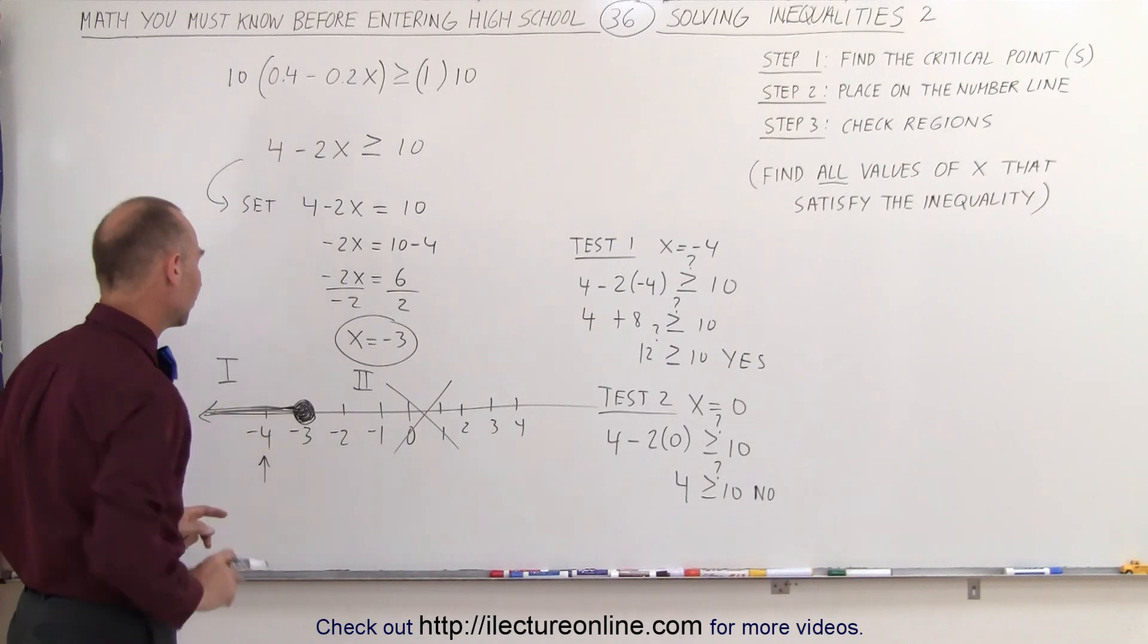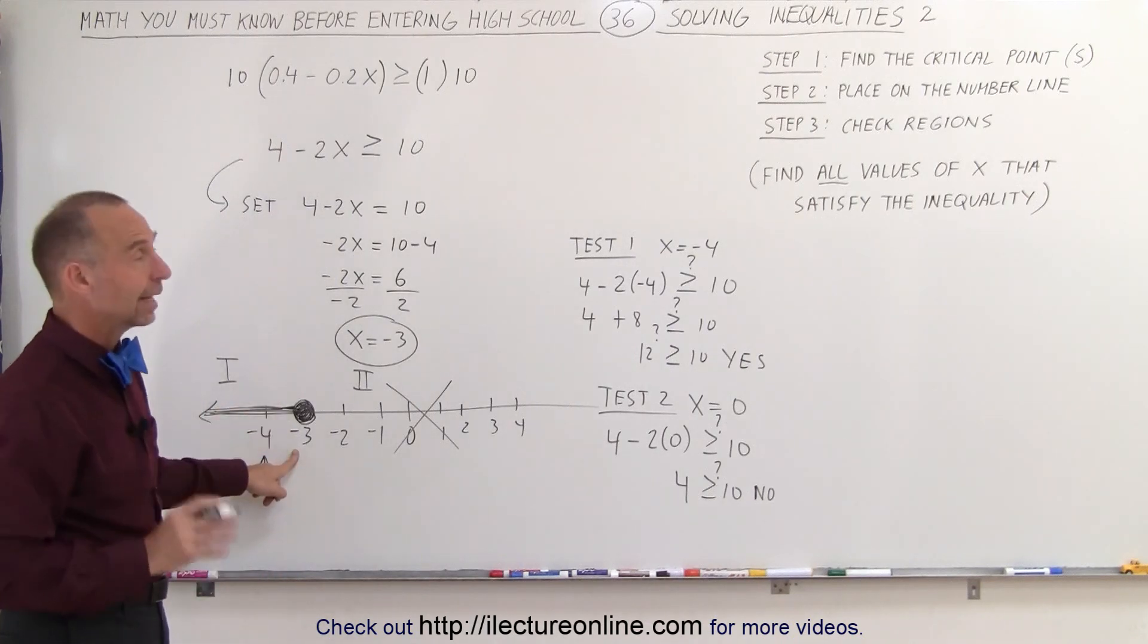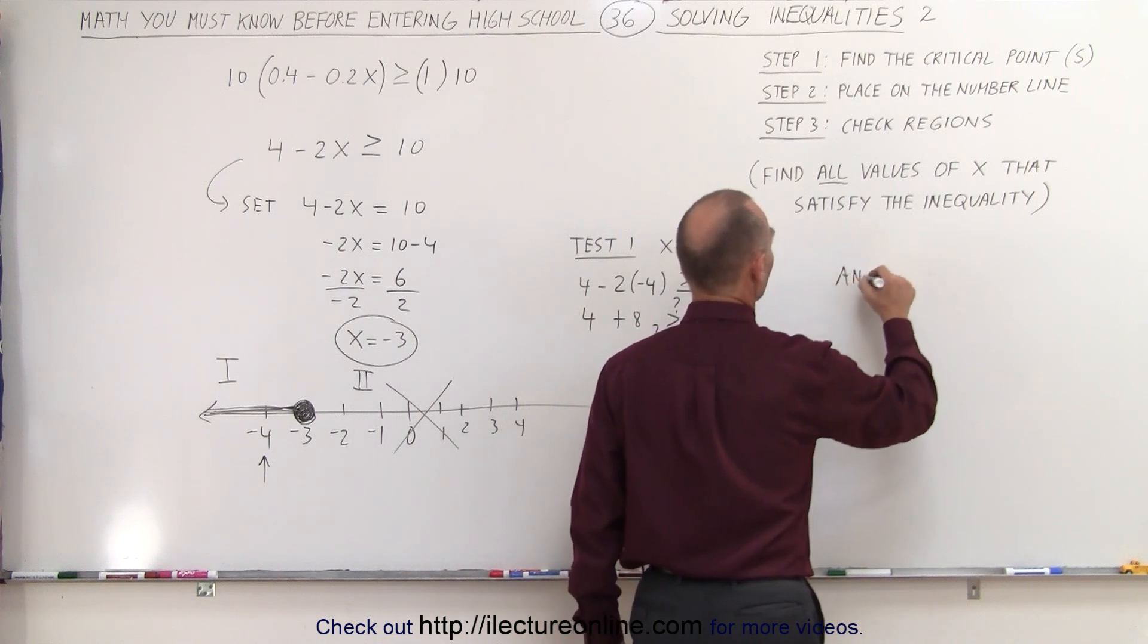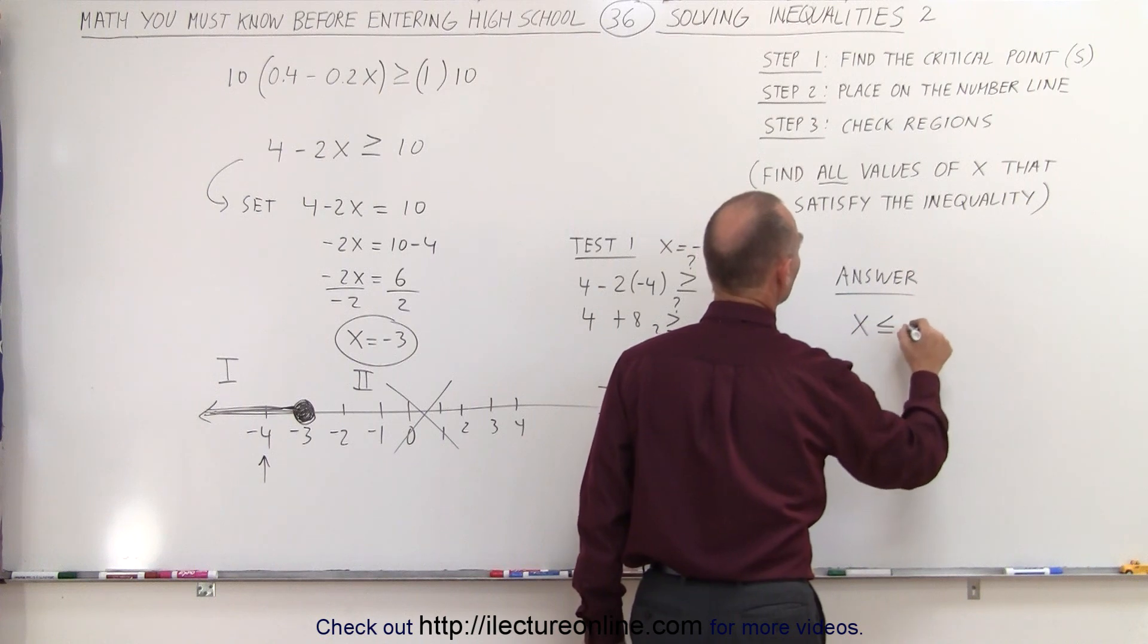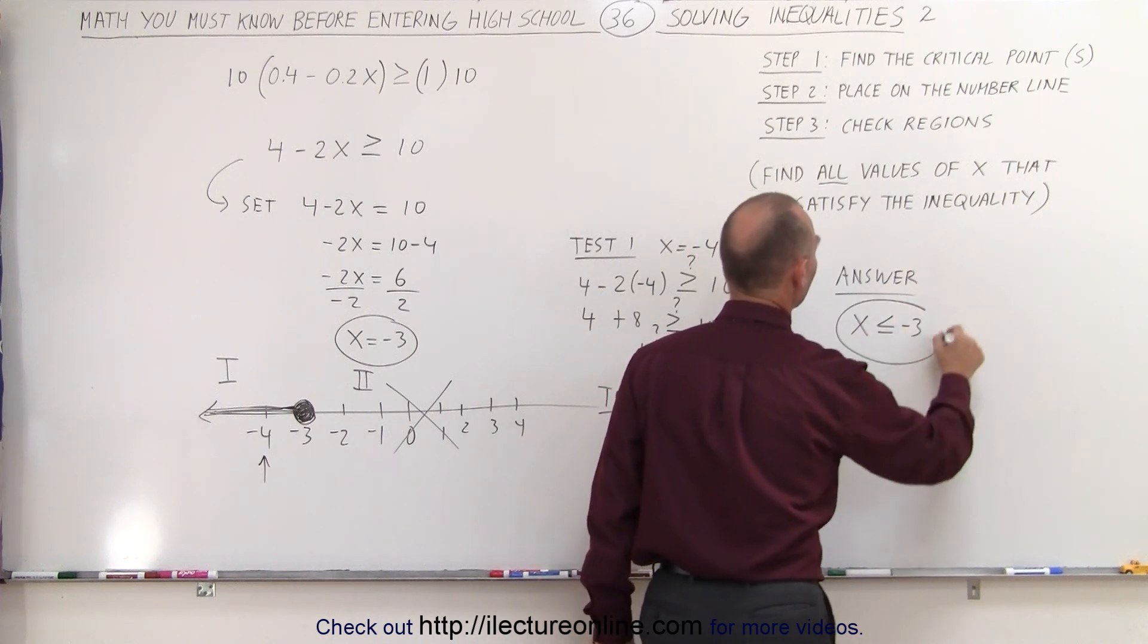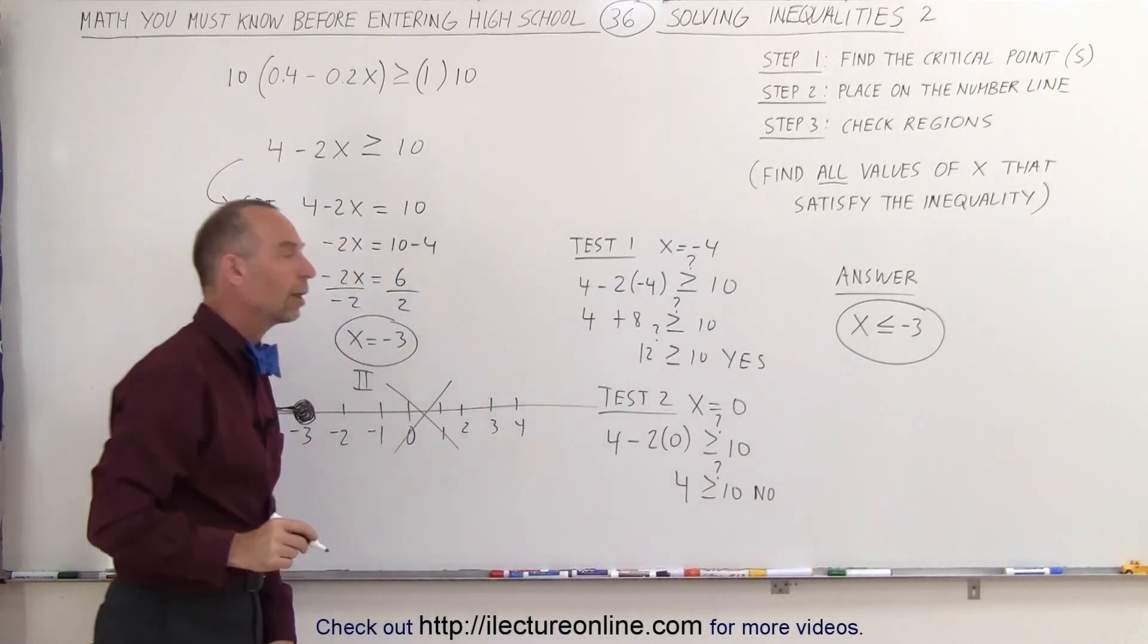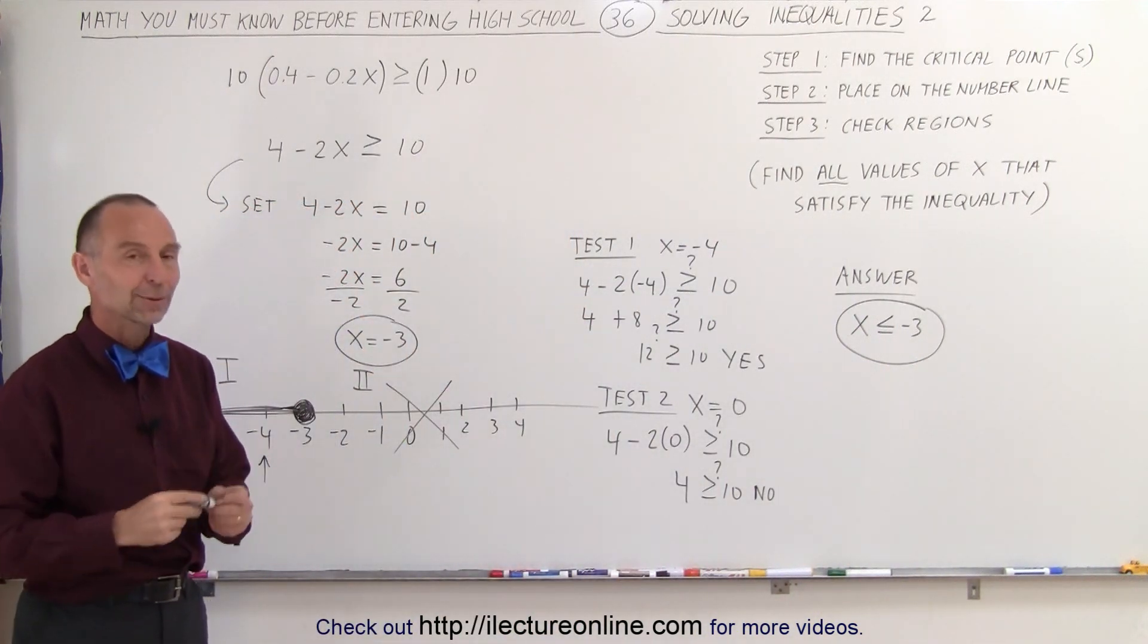Which means none of these points satisfy the inequality, only the points to the left of negative 3, including negative 3. This means that the answer can simply be written by stating that x must be less than or equal to negative 3, and all x's that satisfy this satisfy the original inequality, and that's how we do that.